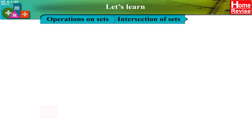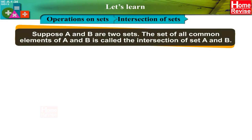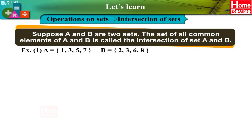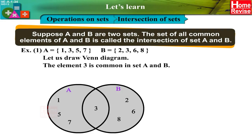Let's learn operations on sets — intersection of two sets. Suppose A and B are two sets. The set of all common elements of A and B is called the intersection of set A and B. It is denoted as A ∩ B and is read as 'A intersection B'. Therefore A ∩ B = {x : x ∈ A and x ∈ B}. Example 1: A = {1, 3, 5, 7}, B = {2, 3, 6, 8}. The element 3 is common in set A and B, therefore A ∩ B = {3}.